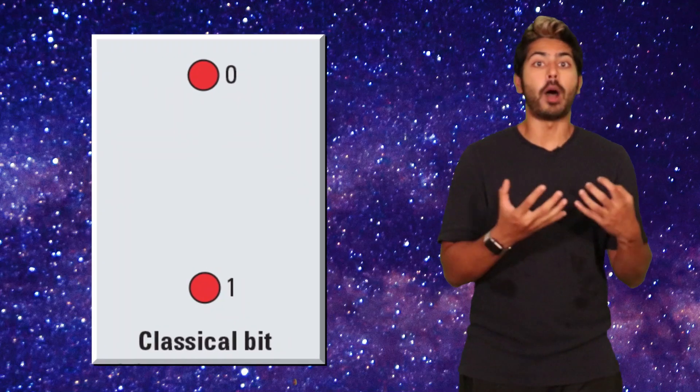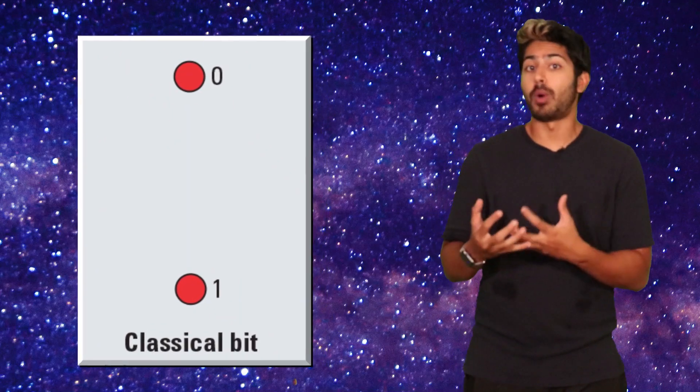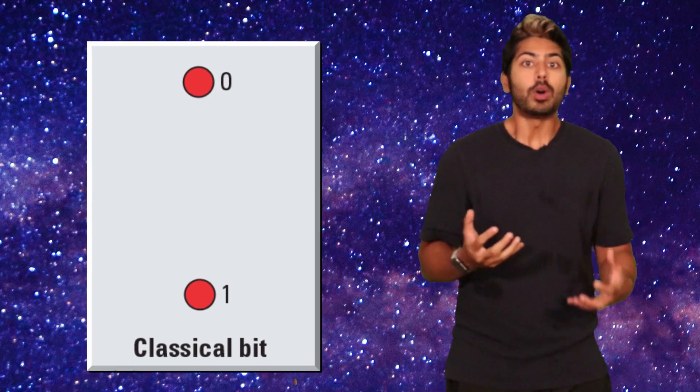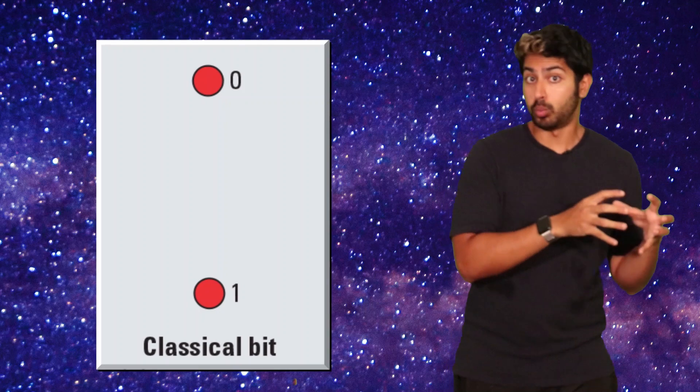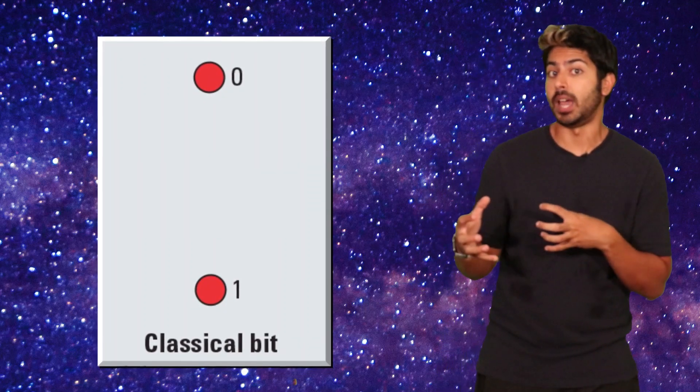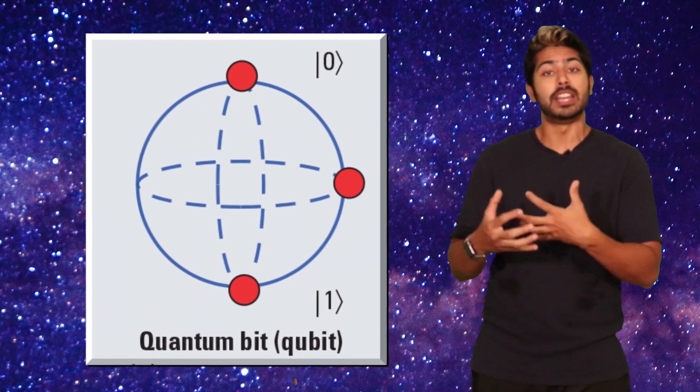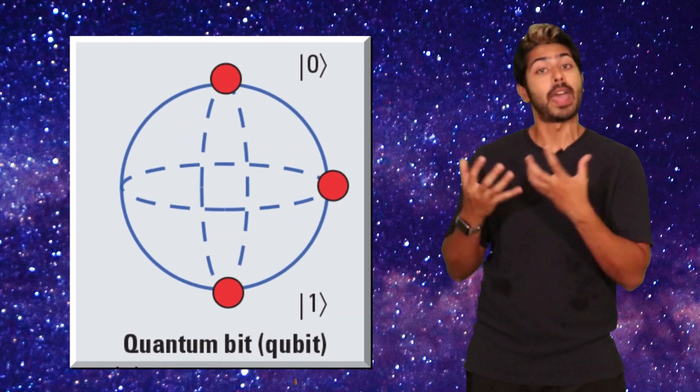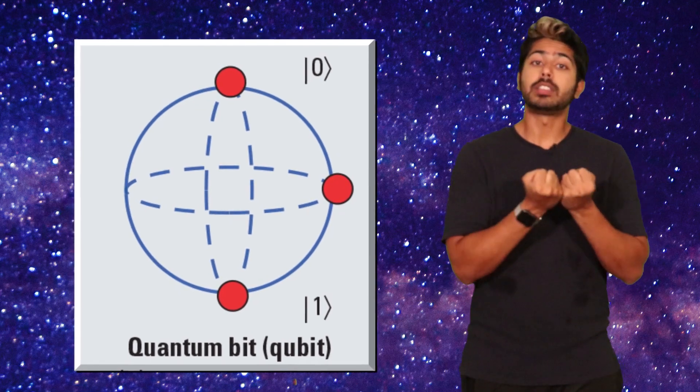Classical computers, the ones we all use, perform operations using classical bits, which are represented as binary data, either a zero or a one. But what if we could have a bit represent both one and zero at the same time? What happens then? Well, quantum mechanics tells us that this kind of superposition of both states is indeed possible at the subatomic level. The basic unit of a quantum computer is called a qubit.